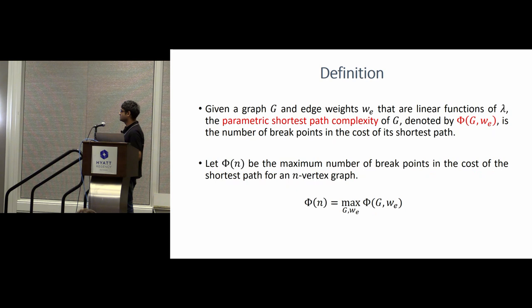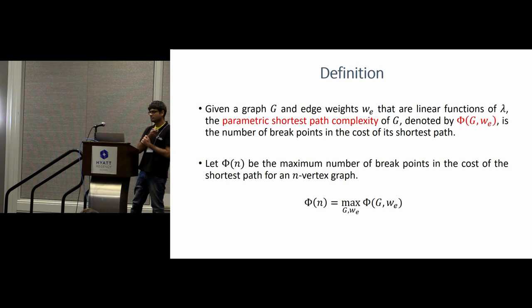And formally speaking, this is defined by the term phi. So phi is known as the parametric shortest path complexity. For this talk, we'll call it just the parametric complexity. And if you're given a graph G, you're given S and T, and you're also given the linear edge weight assignments, then phi of G comma W is simply the number of breakpoints or the number of different shortest paths. And what we are interested in is maximizing this over all possible graphs. So when I talk of phi of n, it means fix a positive integer n, look at all possible graphs on n vertices, look at all possible weight assignments for those graphs, and what is the maximum number of breakpoints you get. That is phi of n.